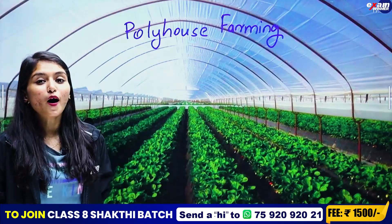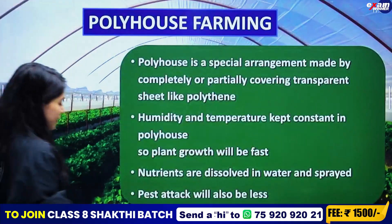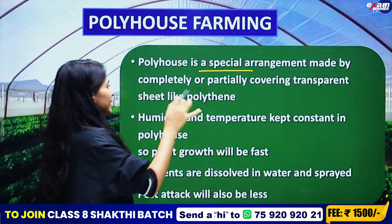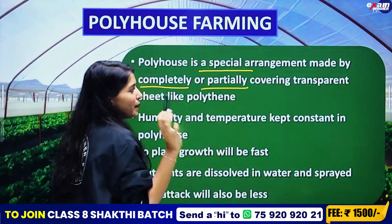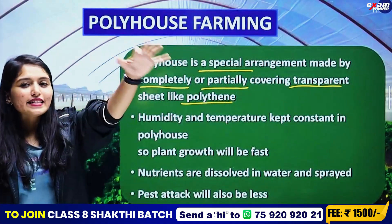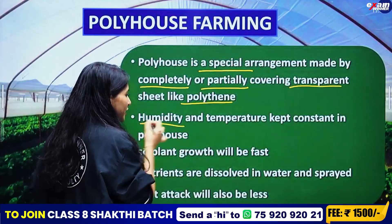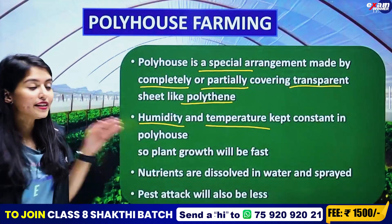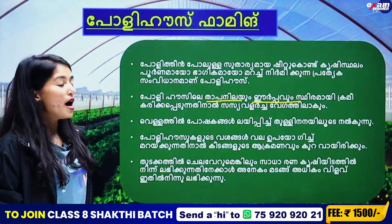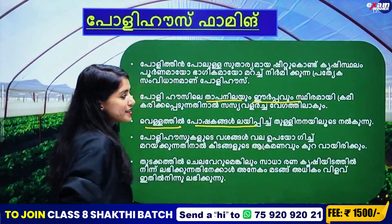This is Polyhouse Farming. It is a special arrangement — completely, partially, we do this. A transparent sheet. This is a special arrangement with a regular arrangement. The first thing is that humidity and temperature — we are all about that. There are lots of very good plants. They don't eat them in water; they're going to eat the plants as well. You can put them in a pot.